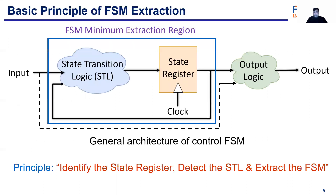The basic principle of finite state machine extraction is quite simple. When we think about EFSM, it has two parts: the first one is the EFSM transition logic or STL, and the second one is the EFSM register, which commonly forms the EFSM minimum extraction region. The principle is: first, we need to identify the EFSM register; next, we have to detect the EFSM transition logic; and finally, we have to extract the EFSM and produce the EFSM transition graph.